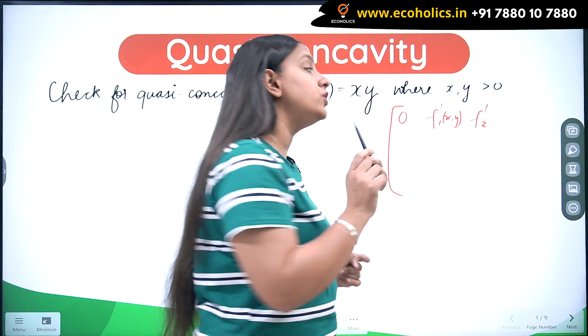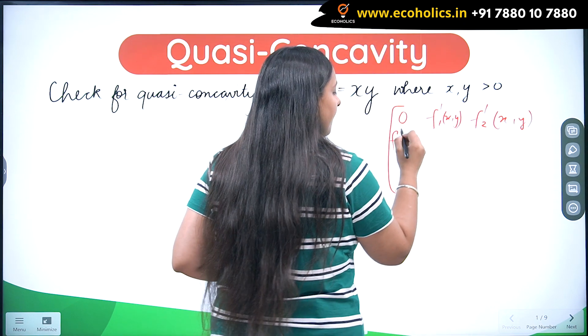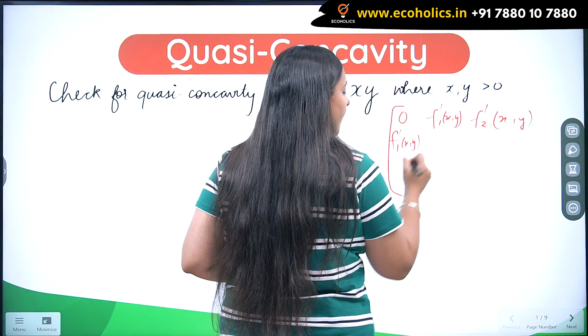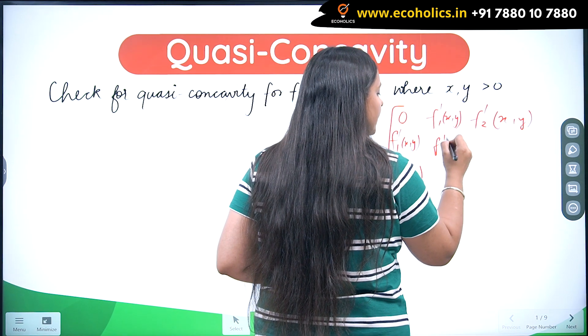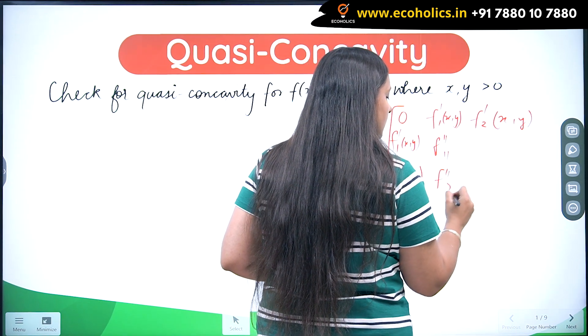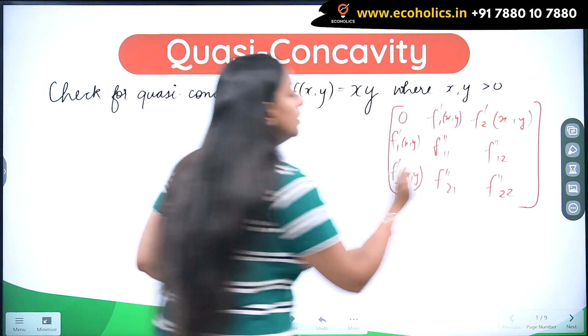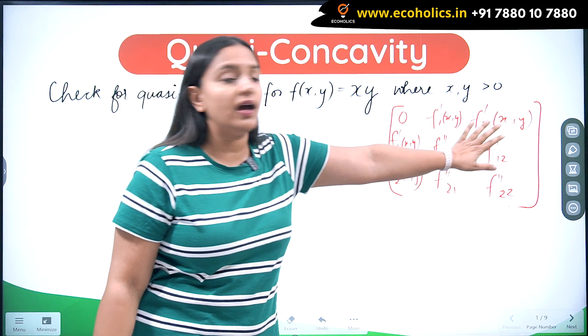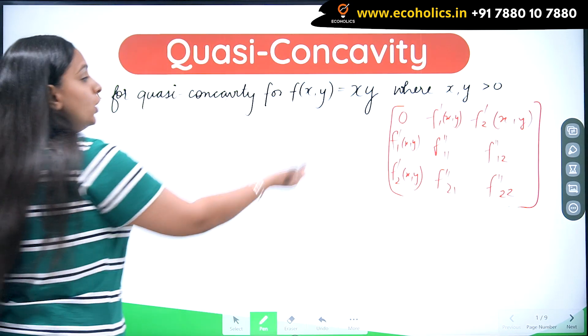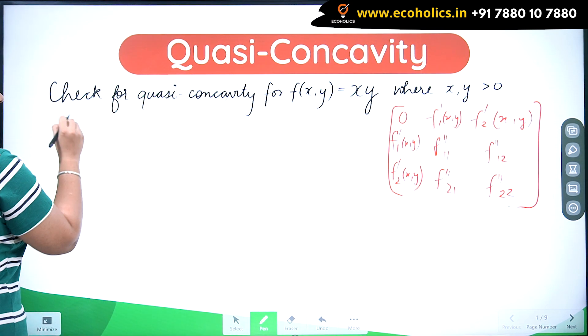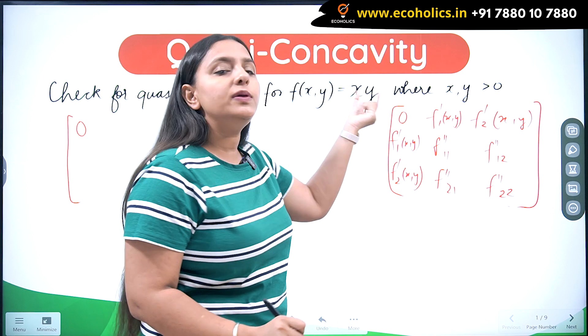So this is my bordered Hessian. I have to fill the values in this matrix. So let's see, for this function the bordered Hessian would be 0. When I say f dash 1, what will be the first order derivative of this with respect to x? It would be equal to y.